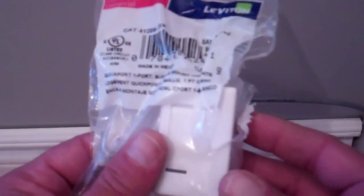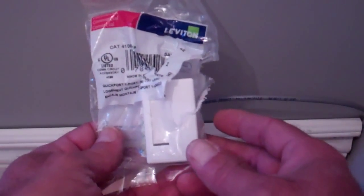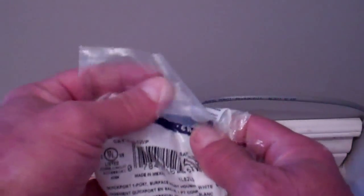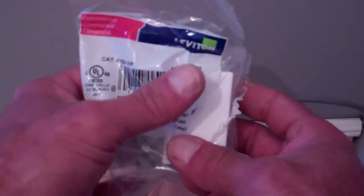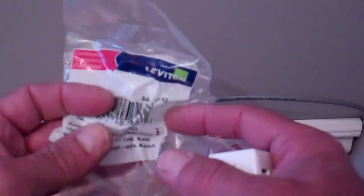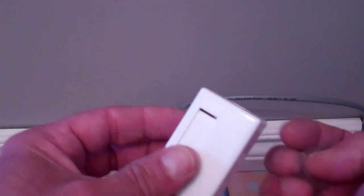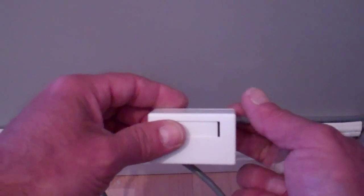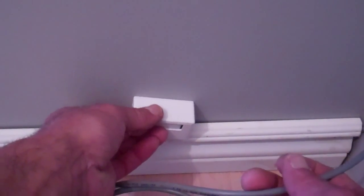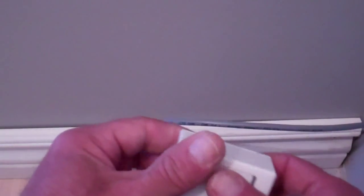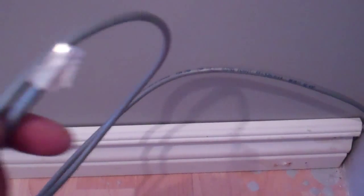We'll terminate that in a surface mounted jack housing. This particular one is manufactured by Leviton, but there are all sorts of different manufacturers. Our objective here is to take this cable which is messy and just hanging on the wall, terminate it in this housing, and then surface mount that on the baseboard, which will be a lot neater than what we have right now.